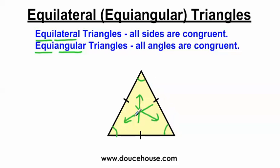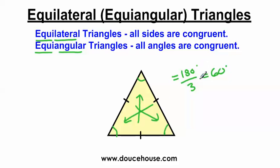Since all the interior angles of a triangle have to equal 180 degrees, I can take 180 and the fact that these are all equal angles and we have three of them. If I divide 180 by 3, we get 60. So every single angle inside an equilateral triangle is going to be 60 degrees. This is always going to be the case — no matter how big or small the equilateral triangle is, it's also going to have equal angles all the way around, which we call equiangular.